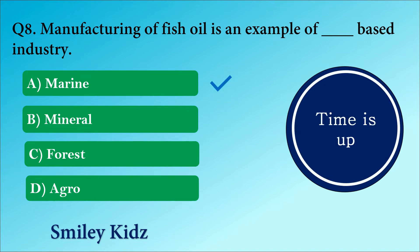The right answer is option A. Marine. Manufacturing of fish oil is an example of marine based industry.